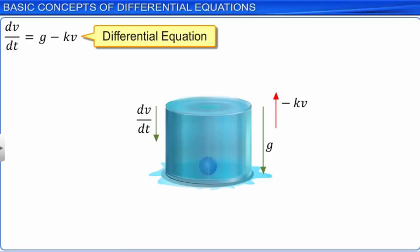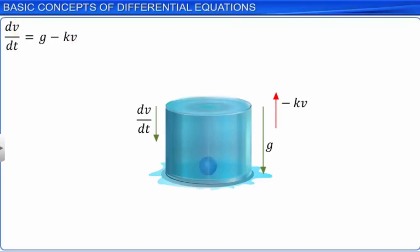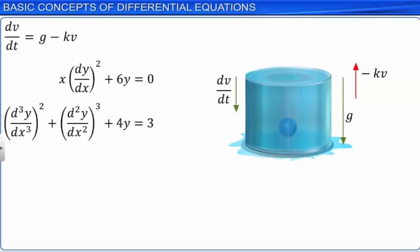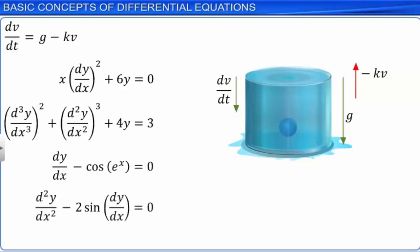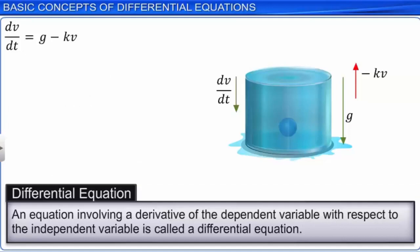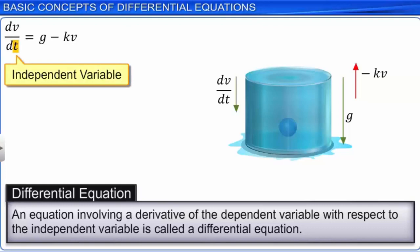Some examples of differential equations are shown here. Formally, an equation involving a derivative of a dependent variable with respect to the independent variable is called a differential equation. In the differential equation for the acceleration of the body in water, the variable t is the independent variable and the variable v is the dependent variable.